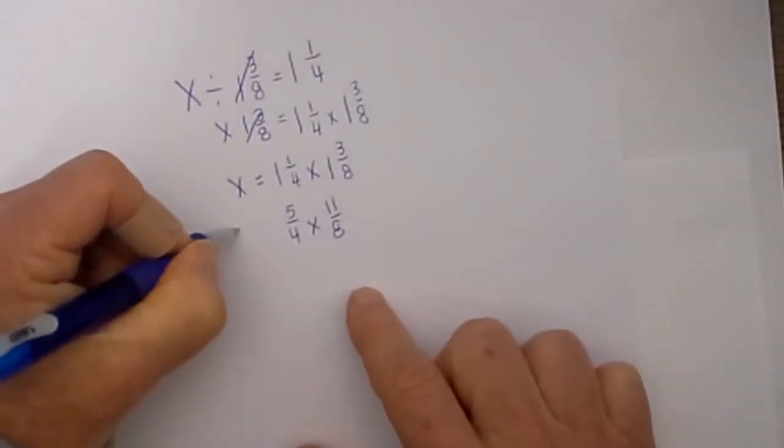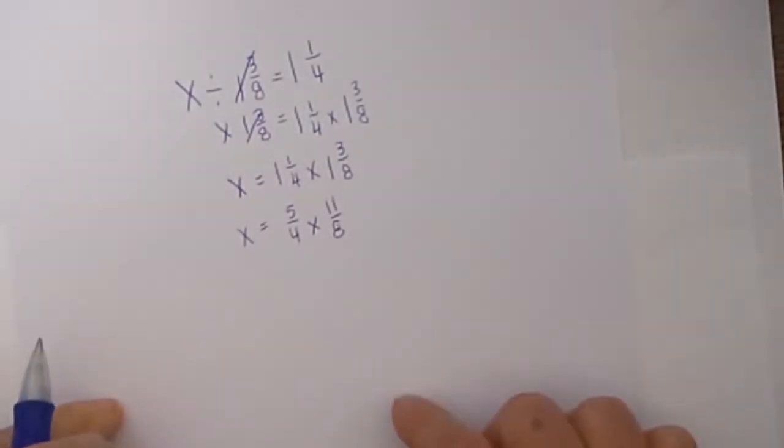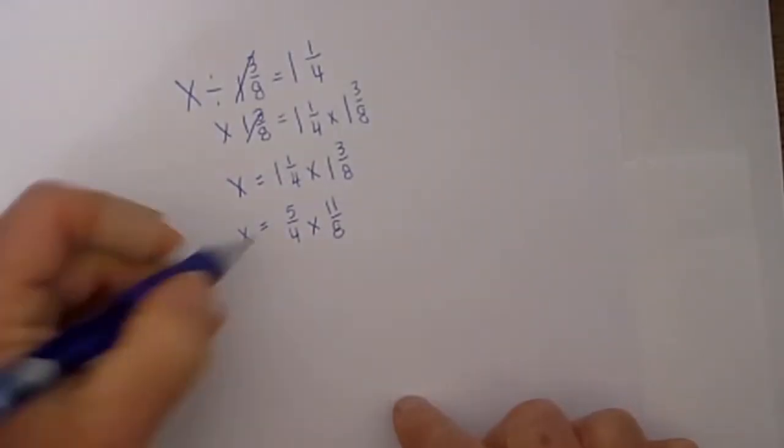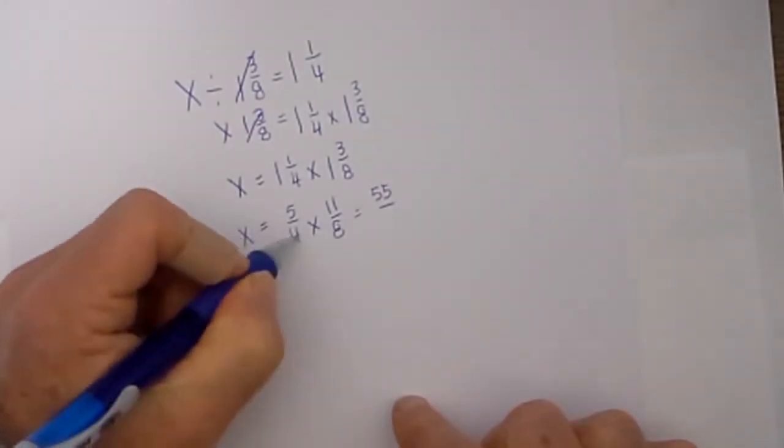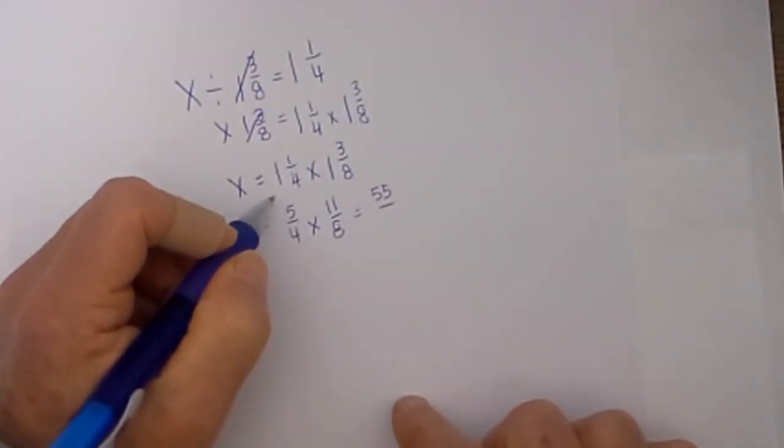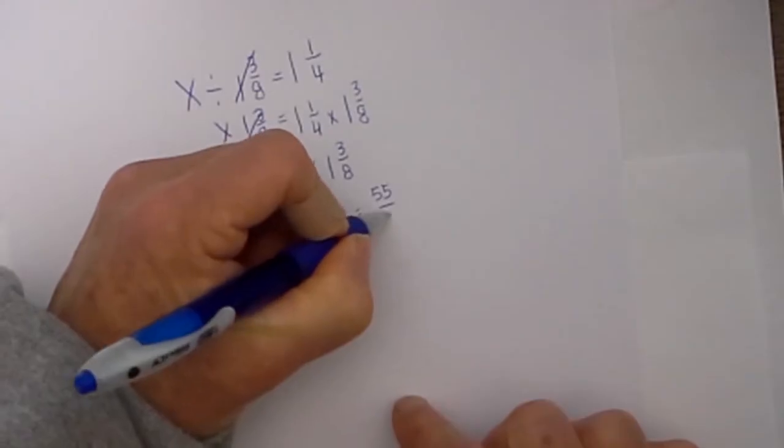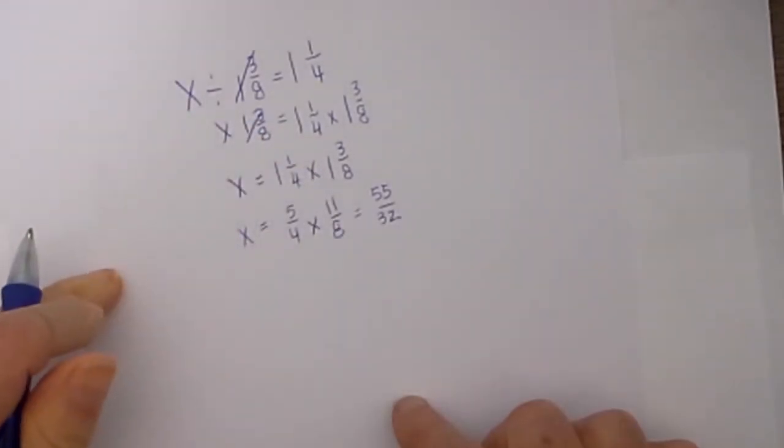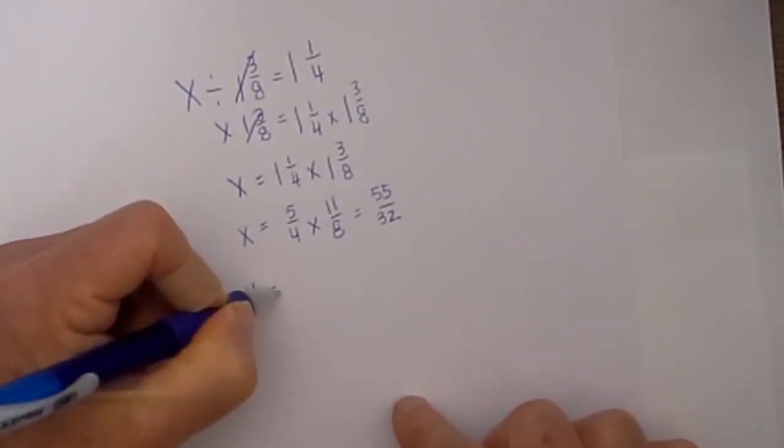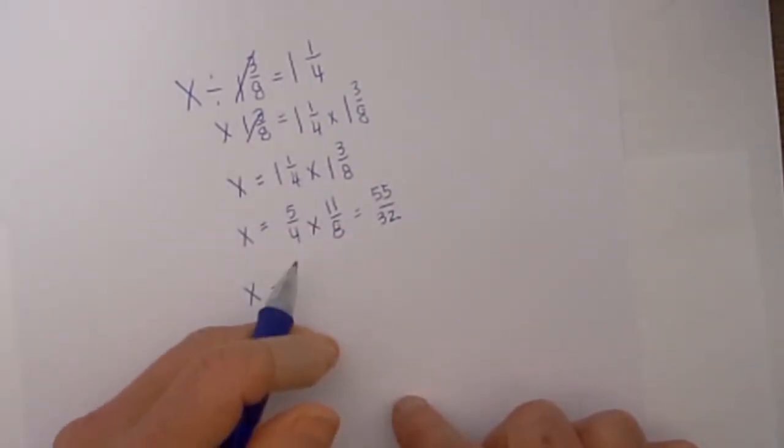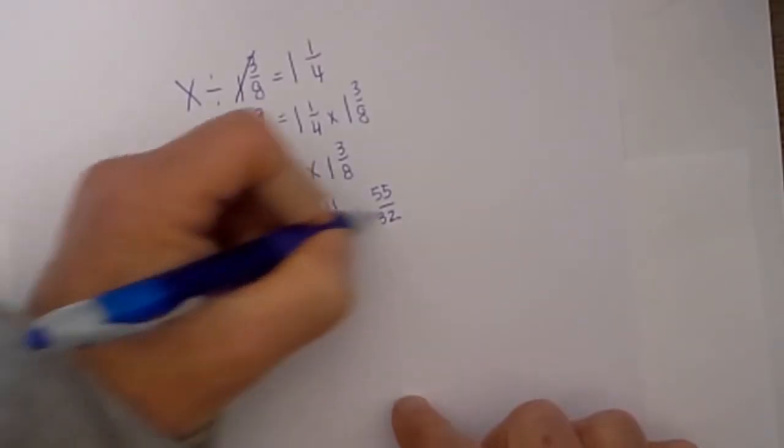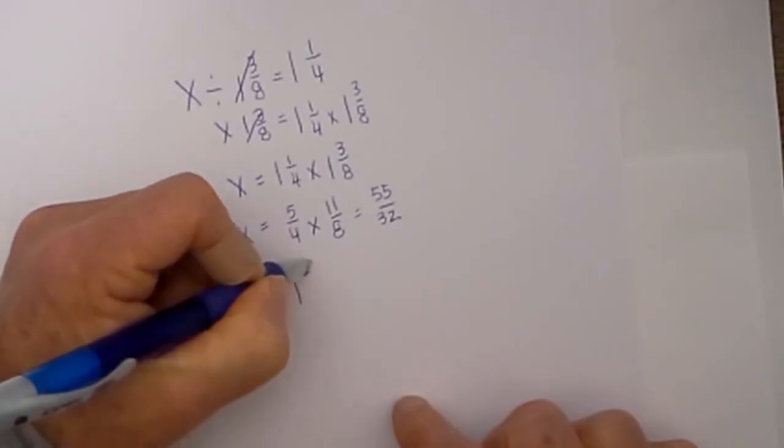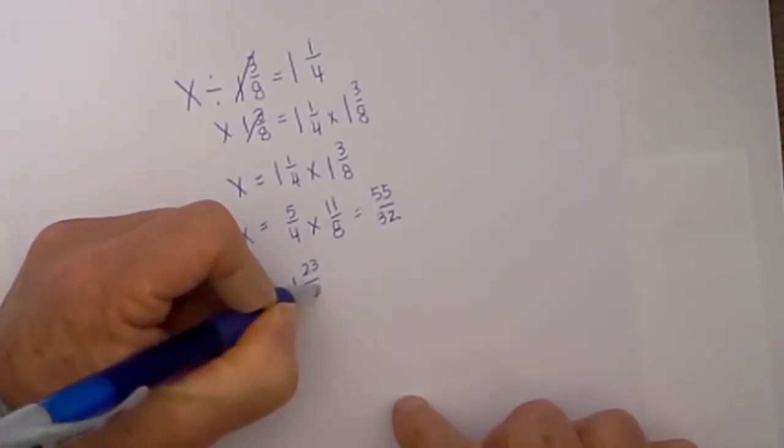So now I have it into a form that is a little bit easier to work with. So I will go 5 times 11 is 55 and 4 times 8 is 32. So now if I would like I can convert this into a mixed fraction. So 32 into 55 will go 1 times, 55 minus 32 is 23 over 32.